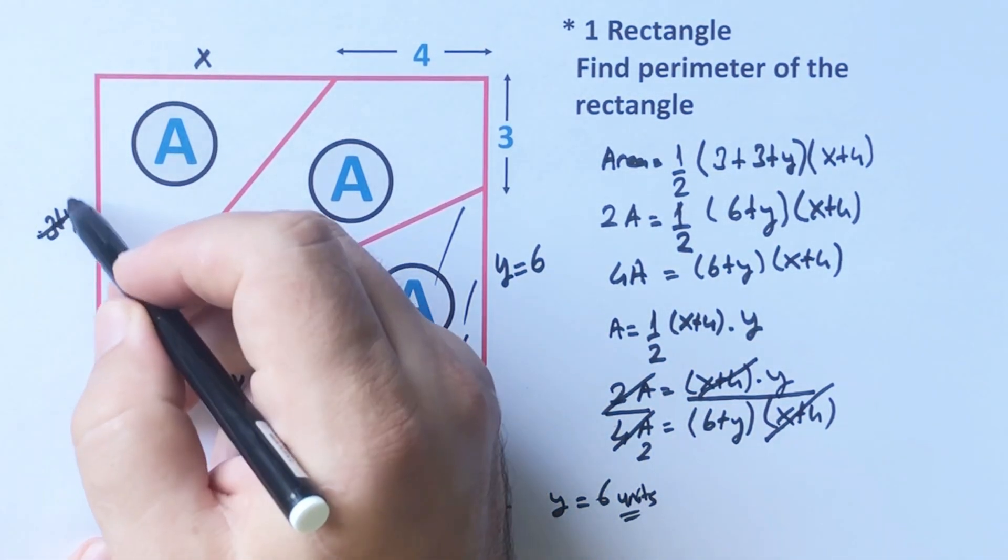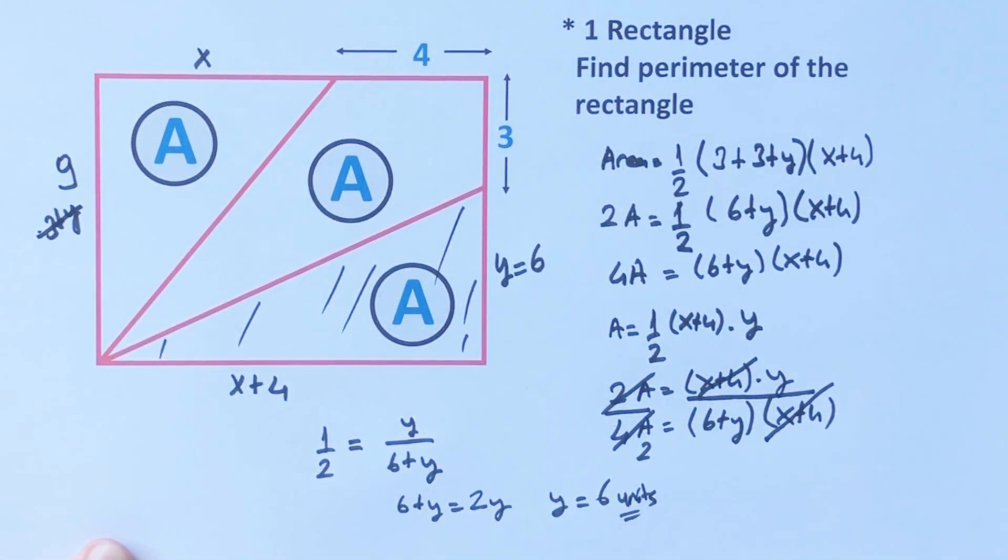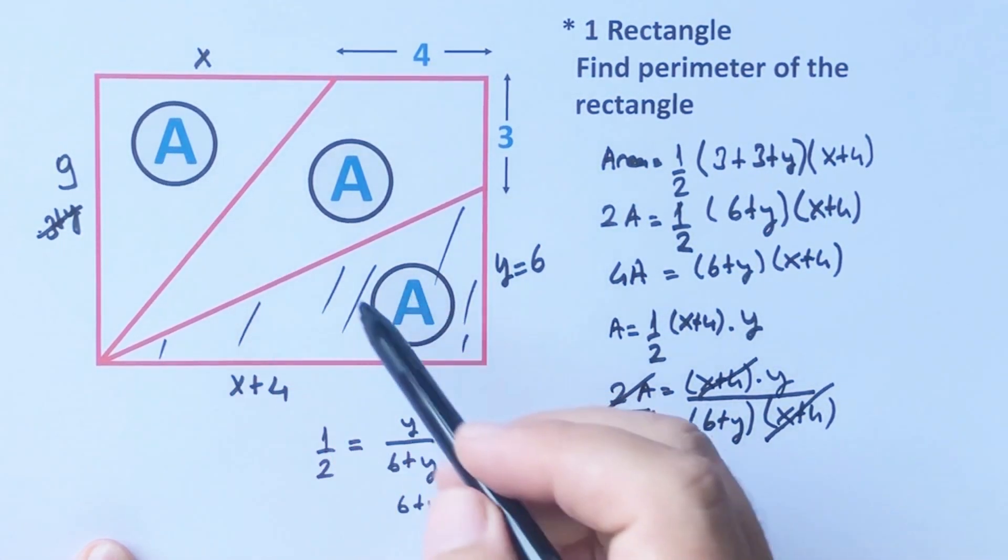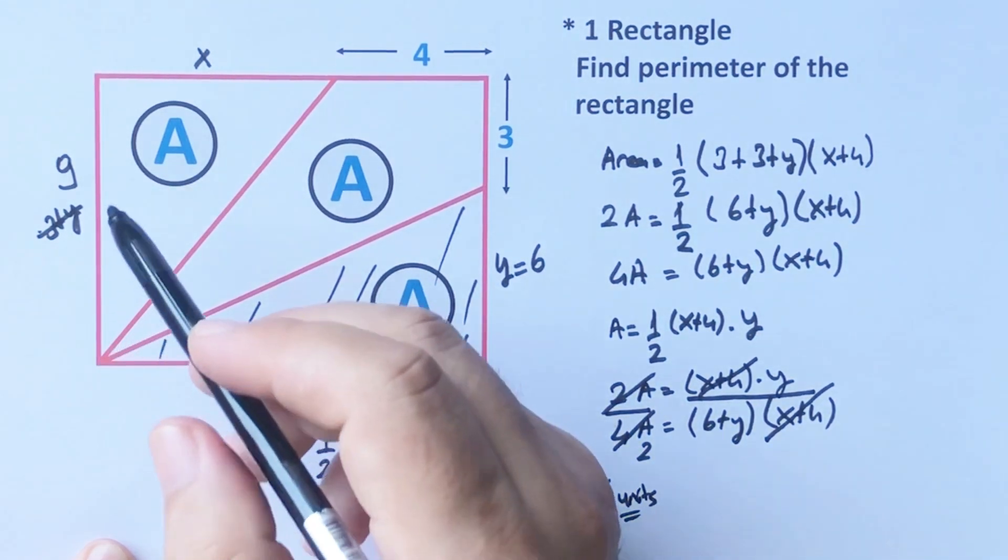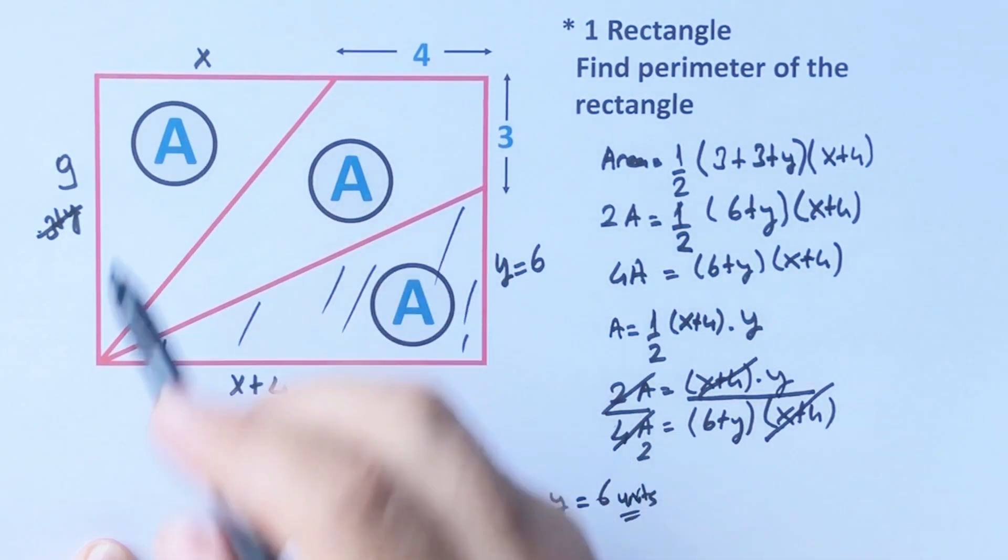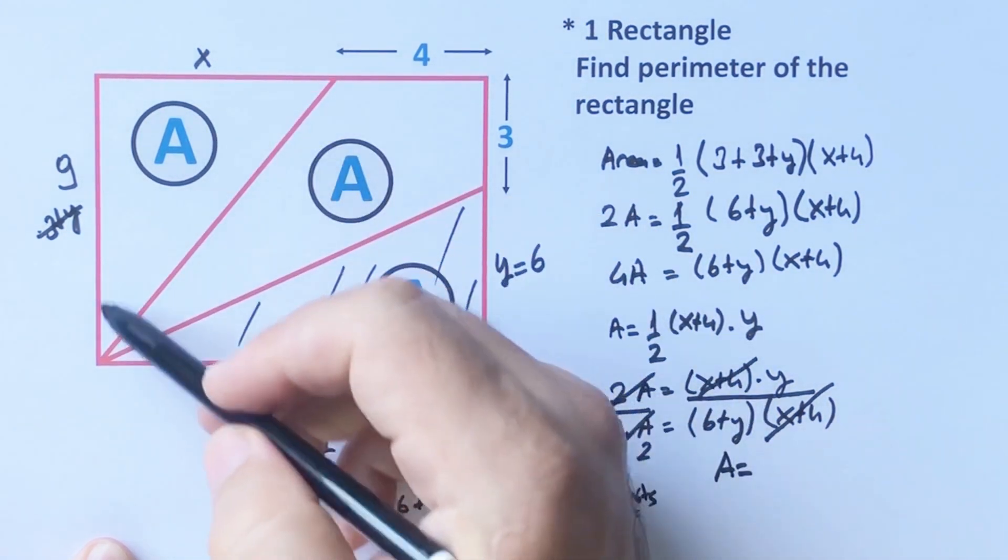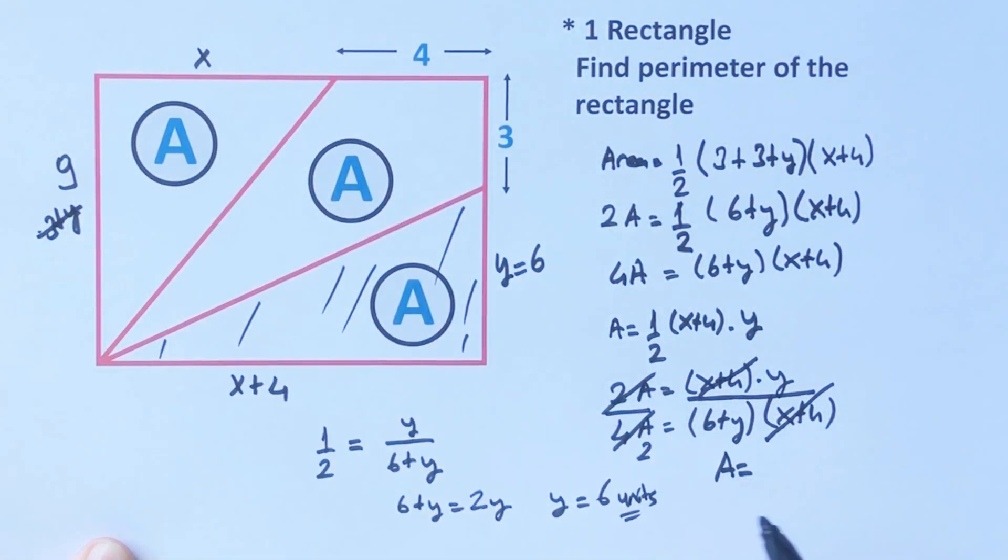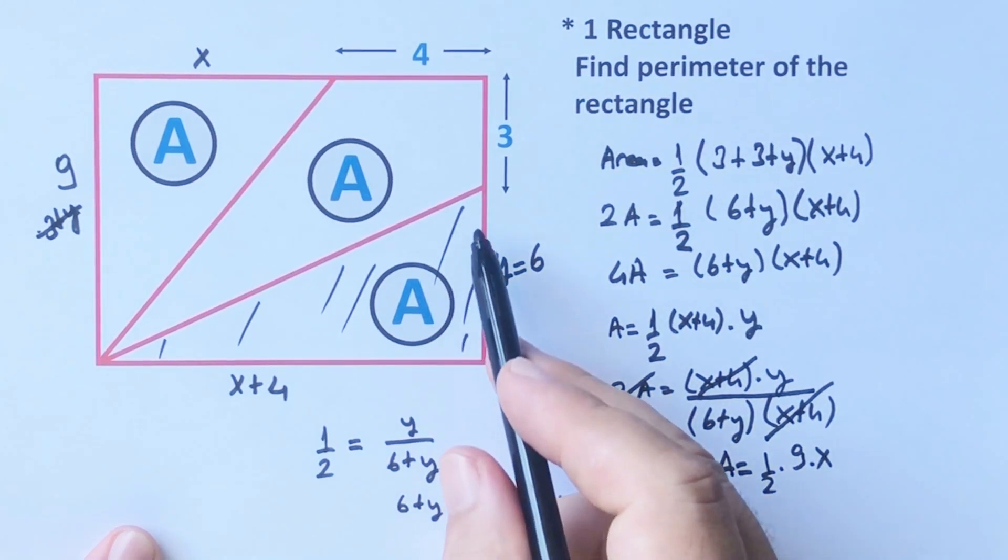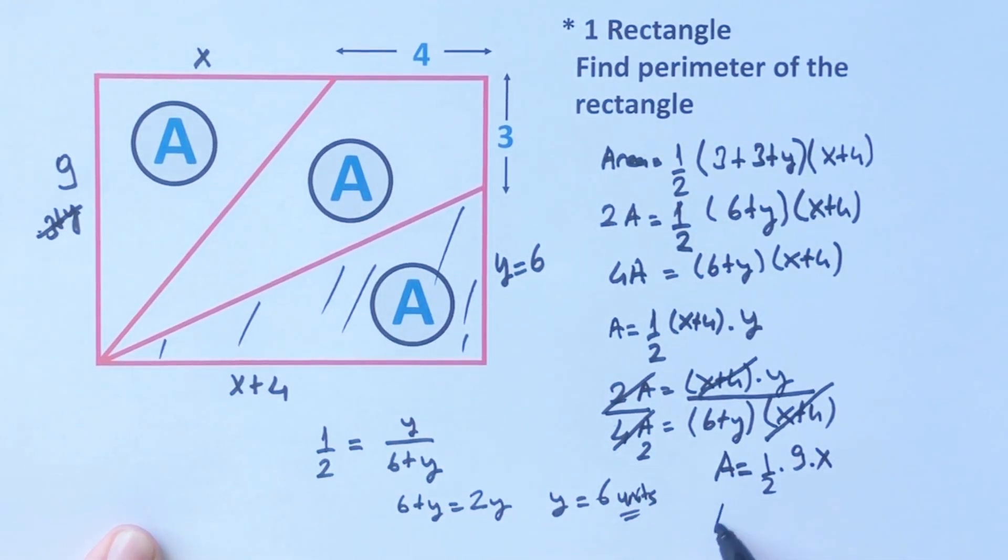Therefore, this side must be equal to nine units. These two triangles are equal, so let's write here: this triangle equals A, A equals half of the base and height, and this triangle area is also A, A equals half of the base and height.